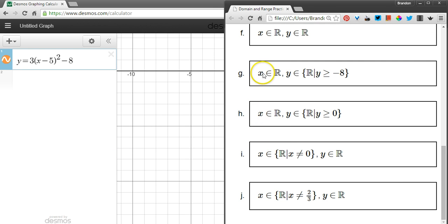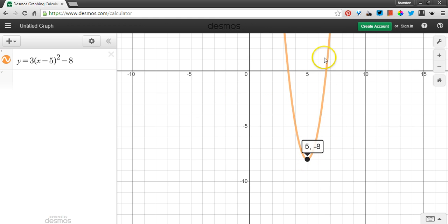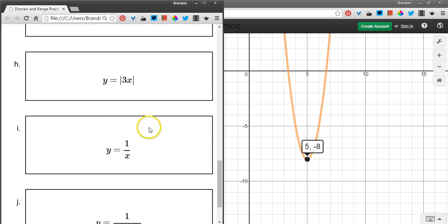Looking at my answers, all real values are possible right here, G for x. Domain is everything. The range is everything starting at minus 8. Y is greater than or equal to negative 8. It has to be up here.